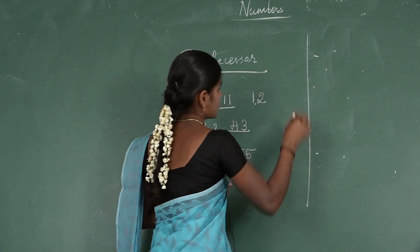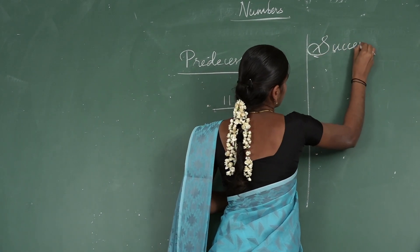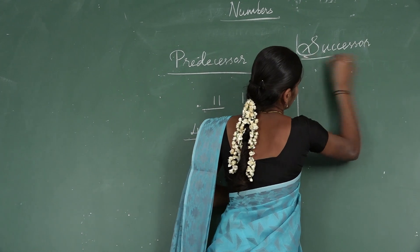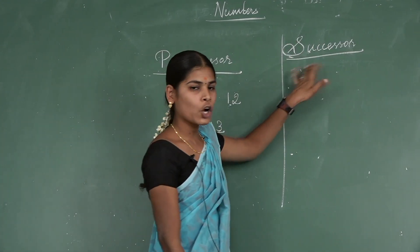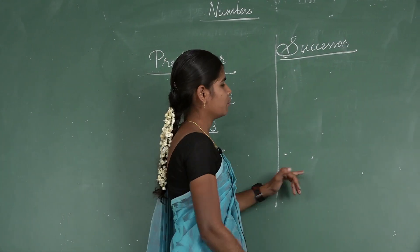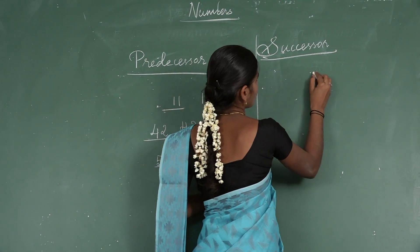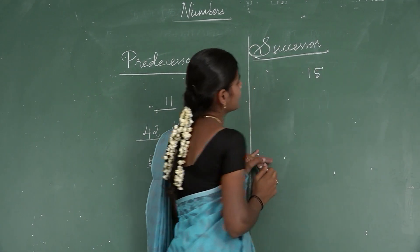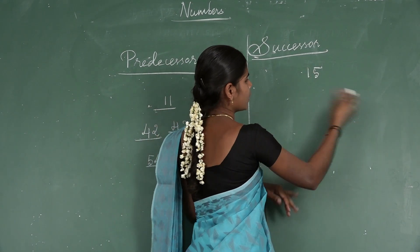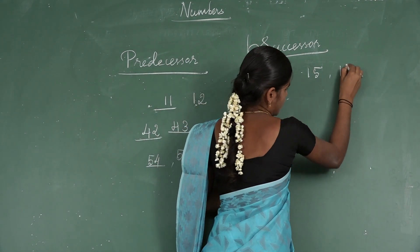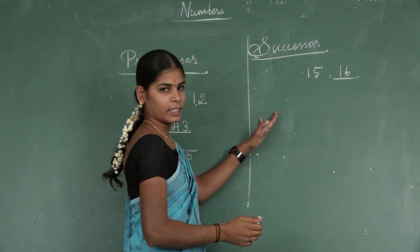Now, what is a successor? Successor is the number that comes just after a given number. For example, take 15. What is the successor of 15? Just after 15 is 16. So 16 is the successor of 15.